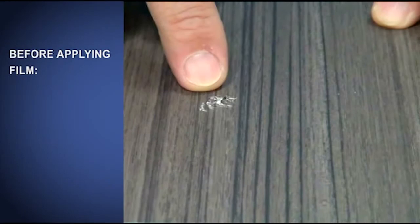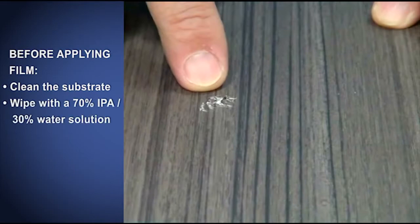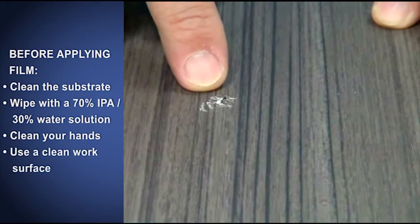Before applying film, always clean the substrate to be sure it is free of dust and contaminants. Wipe with a solution of 70% isopropyl alcohol and 30% water, and wipe dry. Be sure your hands are clean and free of dirt and lotions to avoid contaminating the adhesive, and always work on a clean surface with clean tools.